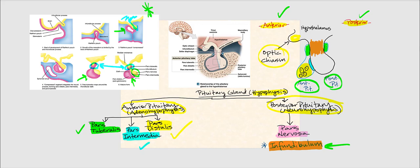The posterior pituitary has only one component: the pars nervosa. The entire posterior pituitary region is the pars nervosa, and because it is the only component, the posterior pituitary is sometimes simply referred to as the pars nervosa.